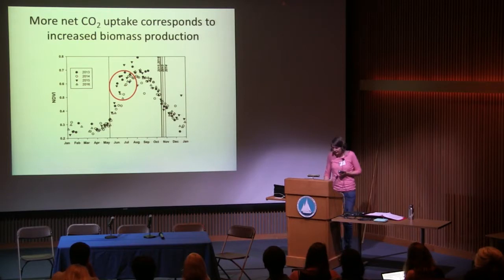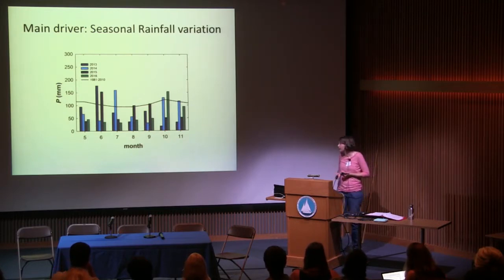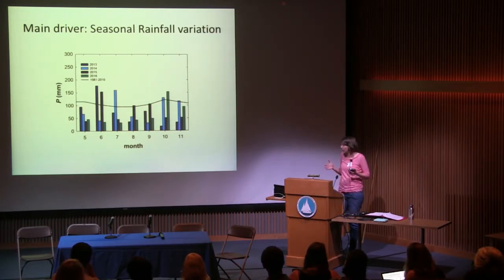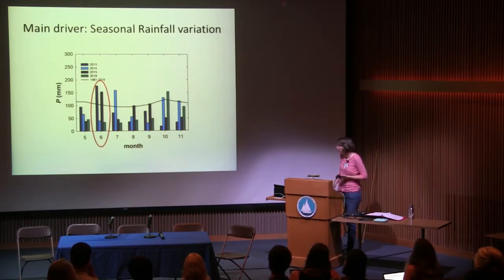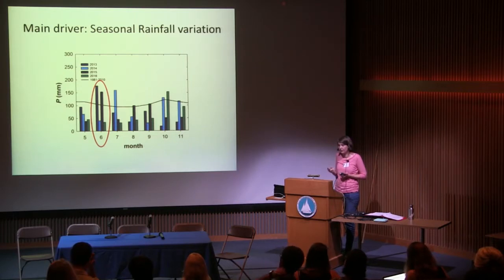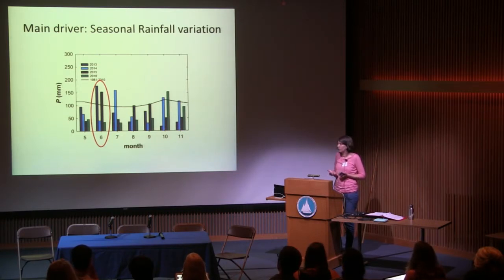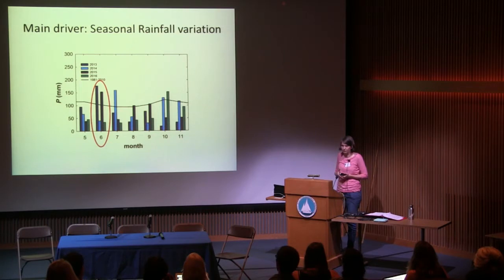Something early in the growing season affects marsh productivity, and it turns out that's rainfall. Looking at monthly rainfall during the growing season, the long-term average is fairly evenly distributed, but individual years show a lot of variation. Early in the growing season, the two more productive years clearly received more rainfall than the other two. This points to soil salinity as a control on marsh productivity and CO2 uptake — with more rainfall, soil salinity was lower, and plants could grow much better rather than being salt-stressed.